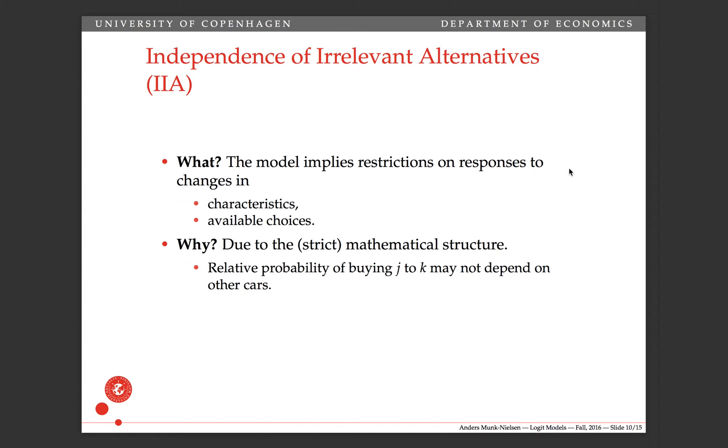It's due to the mathematical structure. The mathematical structure implies that the relative probability of buying j to k may not depend on the characteristics of other cars.